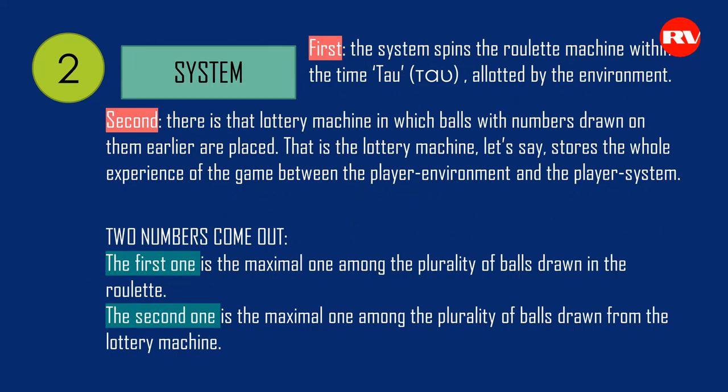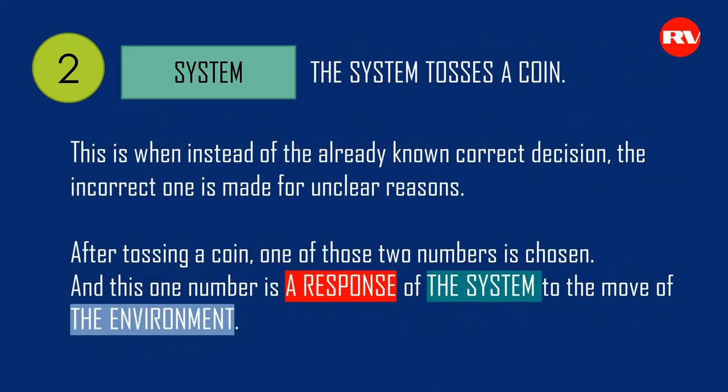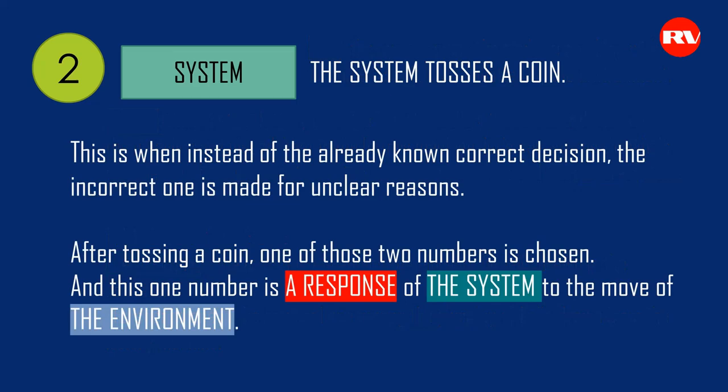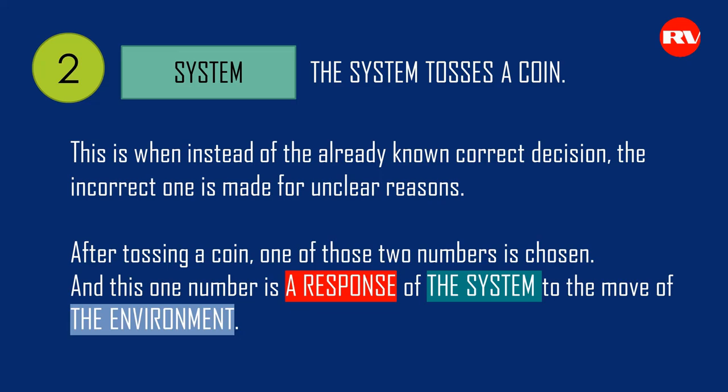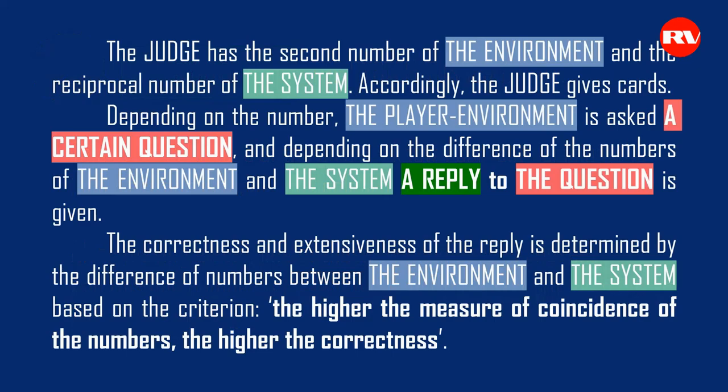Consequently, two numbers come out. The first is the maximal one among the plurality of balls drawn in the roulette. The second is the maximal one among the plurality of balls drawn from the lottery machine. Both numbers are written on blank balls and placed into the lottery machine. Afterwards, the system tosses a coin. Tossing a coin refers to a phenomenon expressed in the folk saying: even Jove nods — when instead of the already known correct decision, the incorrect one is made for unclear reasons. After tossing a coin, one of those two numbers is chosen as the response of the system.